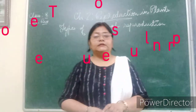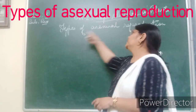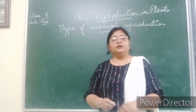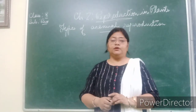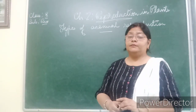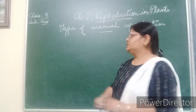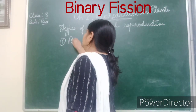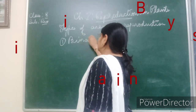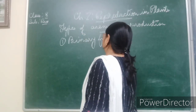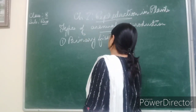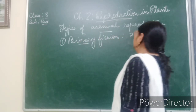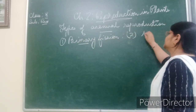Now we'll study the different types of asexual reproduction found in organisms. Starting with number one: Binary Fission. 'Binary' means two, and 'fission' means splitting.